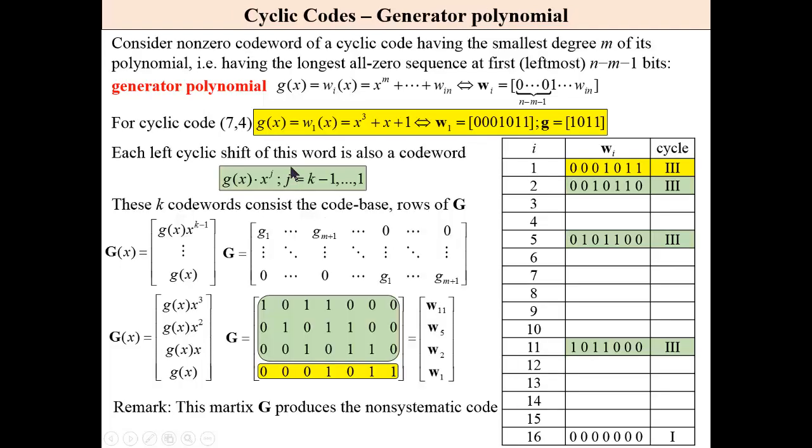Consider non-zero codeword of cyclic code having the smallest degree M of its polynomial. It means having the longest all-zero sequence at first, leftmost, N minus M minus one bits. This codeword is the so-called generator polynomial.